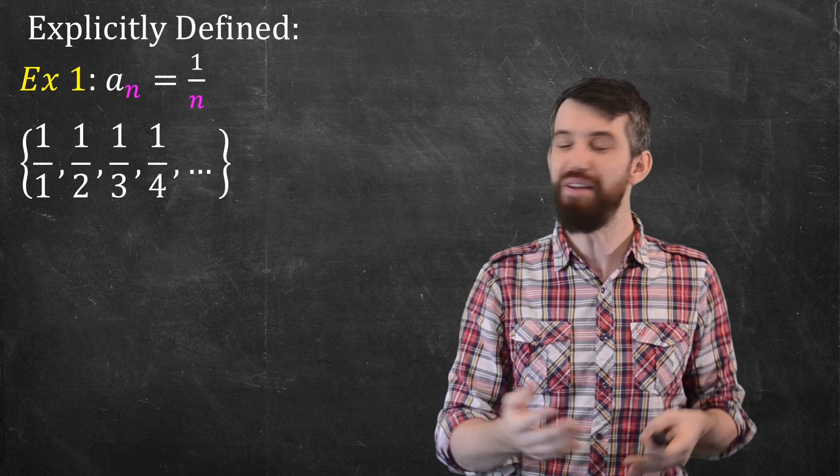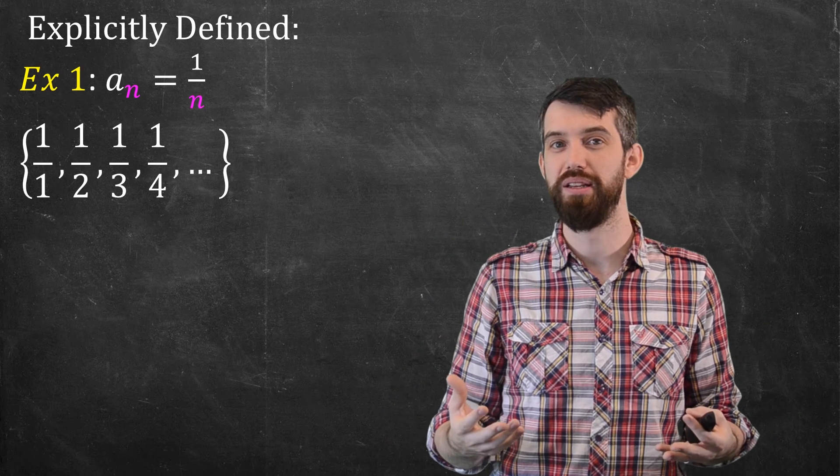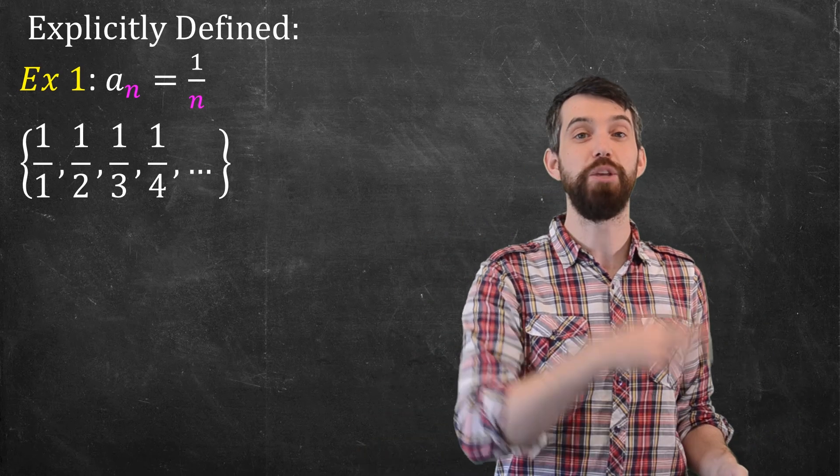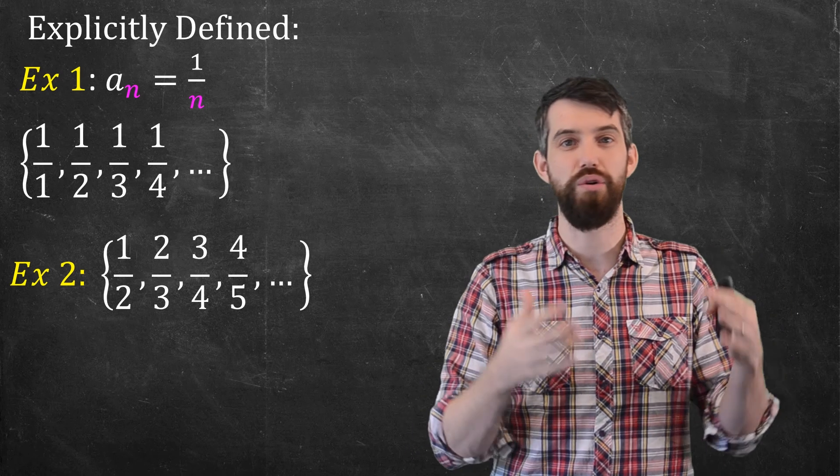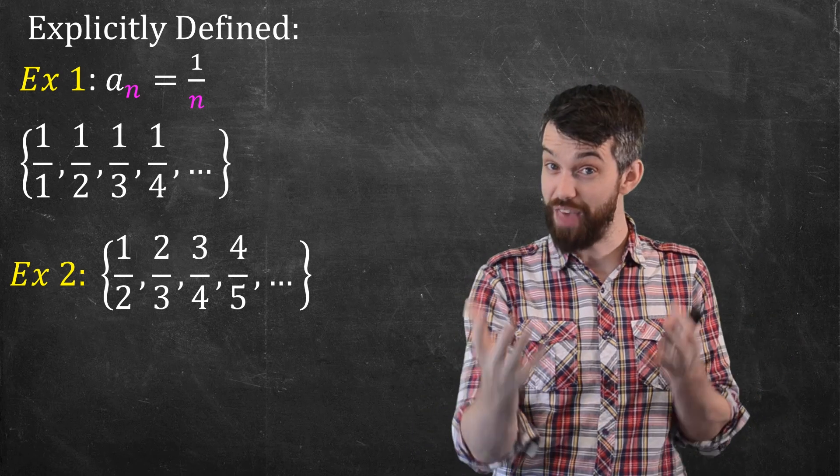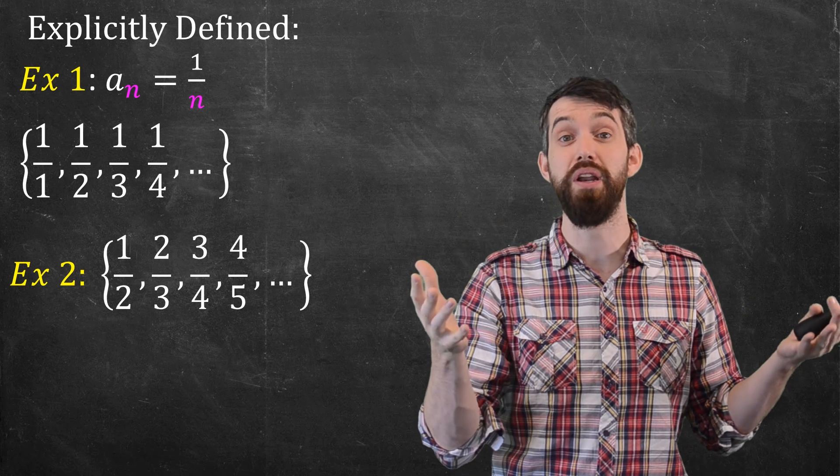So if I have an explicit formula like this, I can come up and list out the elements. But what about the other way around? Suppose I give you the second example that I had before this: 1 half, 2 thirds, 3 quarters, 4 fifths. Does that sequence have an explicit formula? Why don't you pause and see whether you can find it?